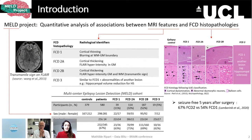This analysis leveraged a multicenter epilepsy lesion detection cohort, also called the MELD cohort, which is composed of more than 500 patients and 400 controls from 21 epileptic centers worldwide. For this analysis, we focused on 359 patients with confirmed histopathology, and we aimed to highlight the MRI identifiers that best differentiate FCD histopathologies.